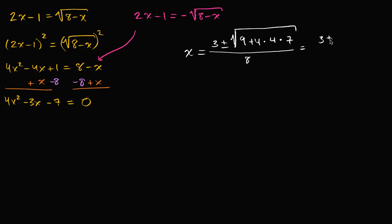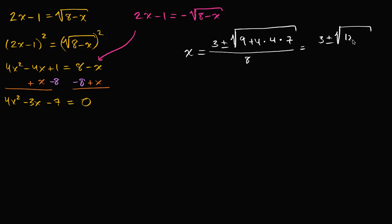So it's three plus or minus the square root of four times four is 16, times seven, which is 112, plus nine — that's 121. So we have three plus or minus the square root of 121, all over eight, which equals three plus or minus 11, all over eight.